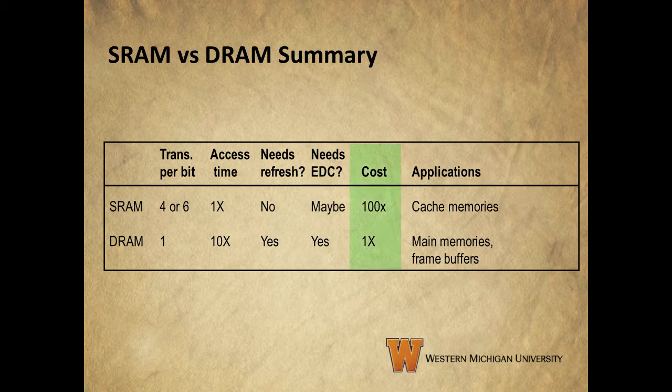The cost in this table refers to the monetary cost of the two types of RAM. As you can see SRAM costs on the order of 100 times more than DRAM, which tells us why we don't just use SRAM for everything. The last column shows us applications that the two types tend to be used for. When we talk about cache memory later in the chapter we'll see why SRAM is well-suited for use in cache memory.